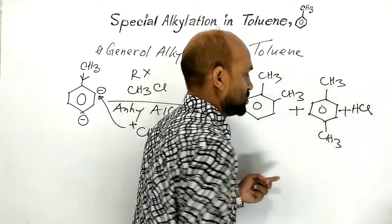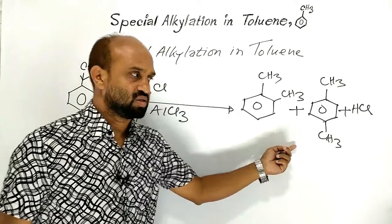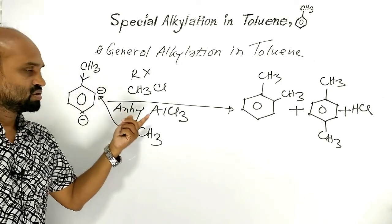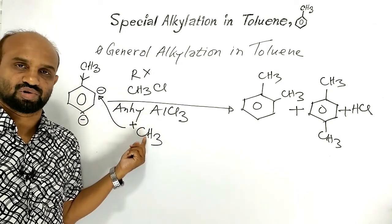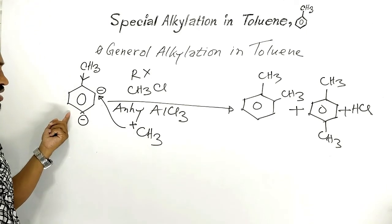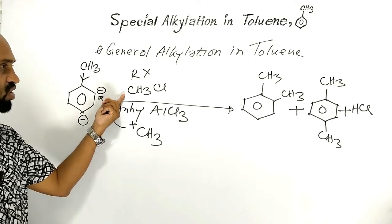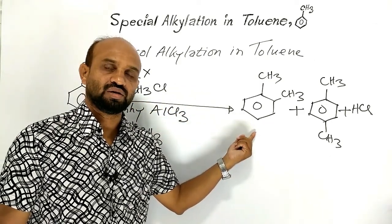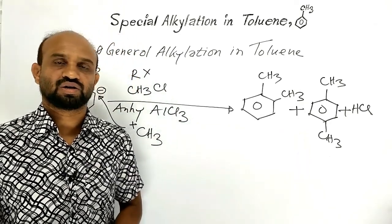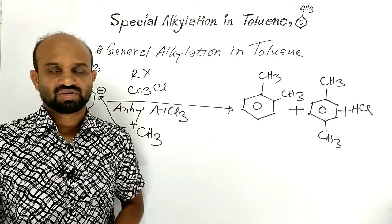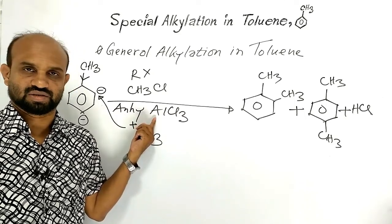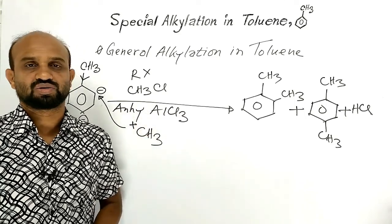HCl is found as a byproduct. This is the general alkylation of toluene — toluene undergoes alkylation in the presence of anhydrous aluminium chloride and forms ortho-xylene and para-xylene. In this reaction, anhydrous aluminium chloride is used as a catalyst and plays an important role.